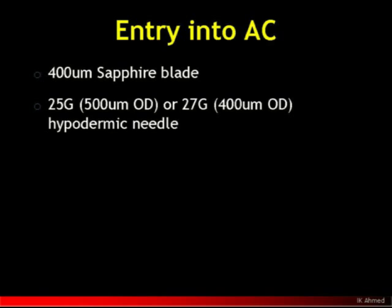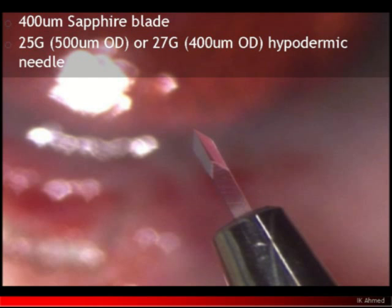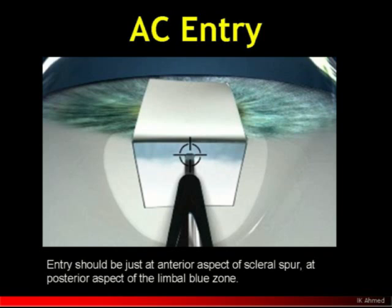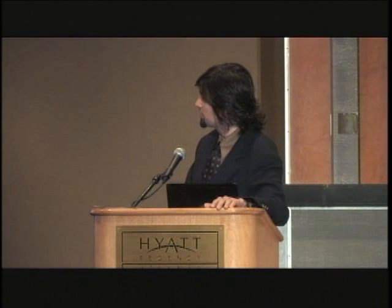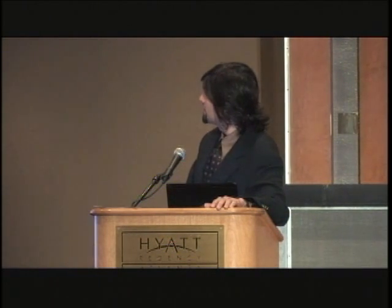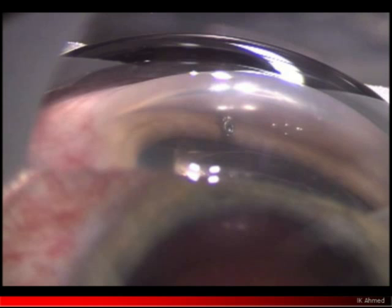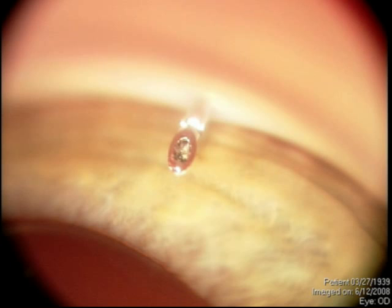It's a little bit different from trabeculectomy because with the implant you have a preferred choice of entry — using any variety of instruments, a 25 or 27 gauge depending on the implant of choice, or a sapphire blade may be used. The key point is entering at the iris plane. Insert the blade or the needle at the iris plane; it helps to rotate the eye down. Some gonioscopy views show that the space is adequate between the cornea and the iris.